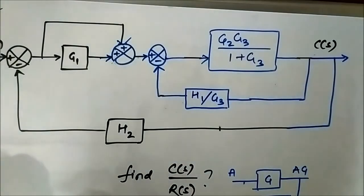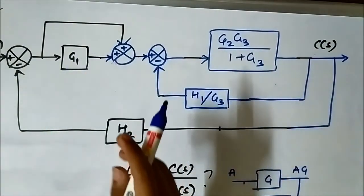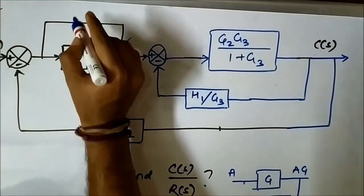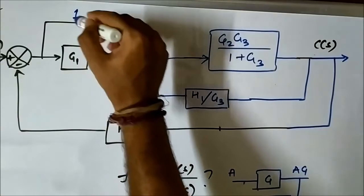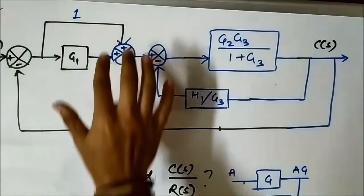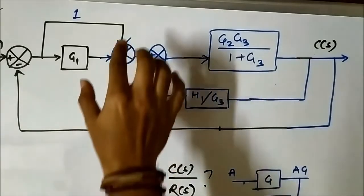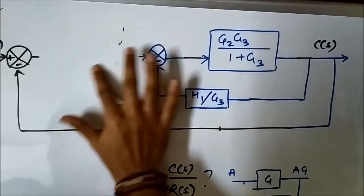After splitting the summer into two parts, there are two forward paths. One forward path has a gain of G1 and another has a gain of unity — there is no block, so the gain is 1. We can therefore eliminate this entire parallel combination as a single block having gain 1+G1.